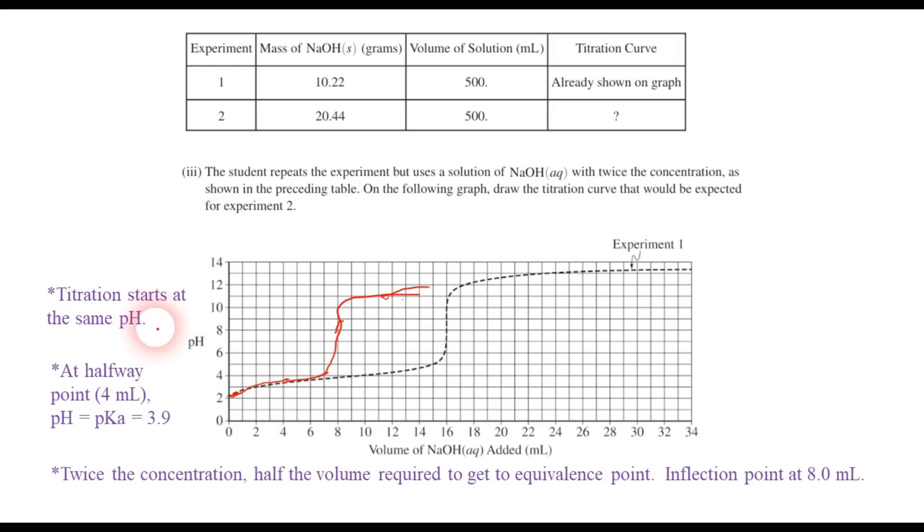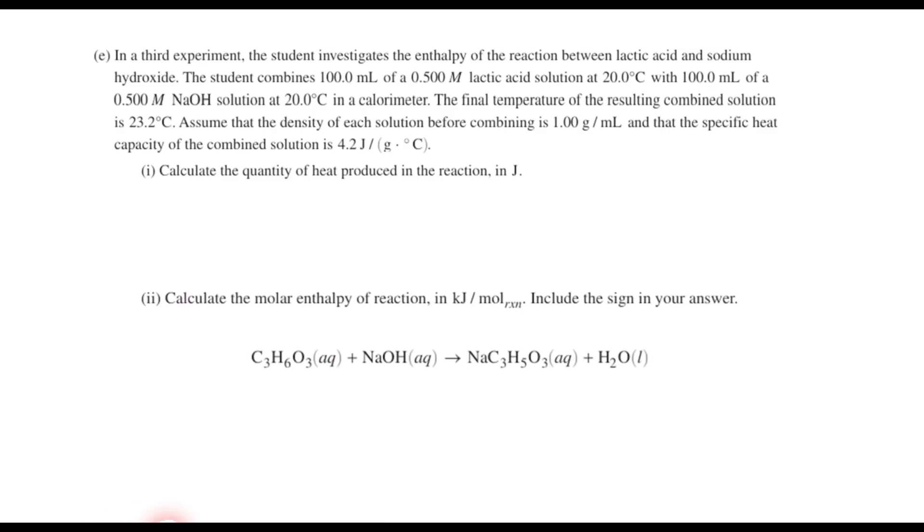The titration starts at the same pH. And at the halfway point, which is 4 milliliters, your pH should be about 3.9. And then you have that inflection point in there.